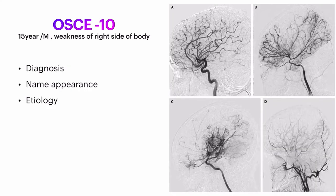Question ten: a young patient came with complaint of weakness of one side of the body. An angiography was done. Write down the appearance seen in the angiography, the etiology, and the varying presentation of this condition in children versus adults.